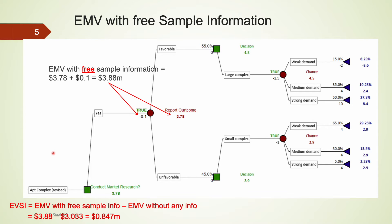To calculate EVSI, we need the EMV with free sample information. We know that after paying $100k for the market research, the company's EMV is $3.78 million. If the market research is completely free, the company's EMV would be $100k more — that's $3.88 million. Therefore, the EMV with free sample information is $3.88 million. With the EMV without any information and the EMV with free sample information now calculated, we can calculate EVSI as $0.847 million.